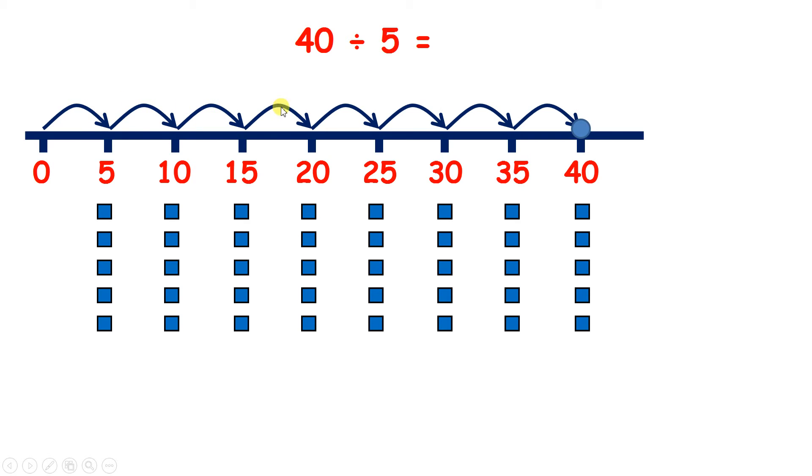So I've made 1, 2, 3, 4, 5, 6, 7, 8 jumps. I've got 8 groups of 5. So 40 divided by 5 is 8.